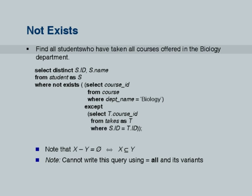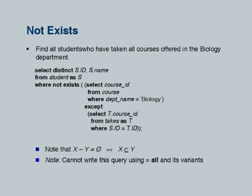Find all students who have taken all courses offered in the biology department. This one is going to use a NOT EXISTS query. In SQL, you would like to use universal quantification — something is true for all something else. Unfortunately SQL does not support universal quantification directly. Therefore we have to use NOT EXISTS to achieve this.